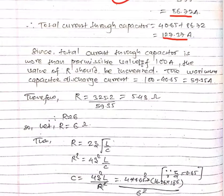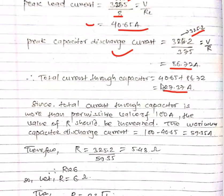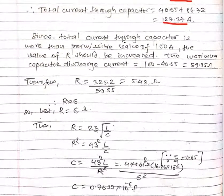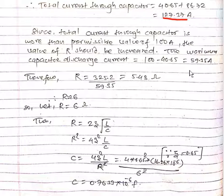Since the total current through capacitor is more than the permissible value of 100 ampere, the value of R should be increased. The maximum capacitor discharge current will be 100 minus the peak load current of 40.65, so it will be 59.35 ampere.